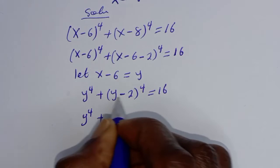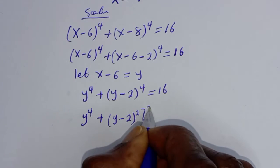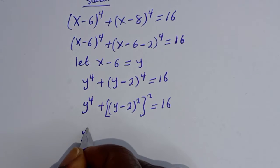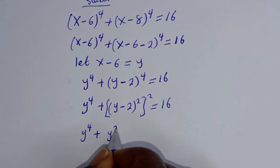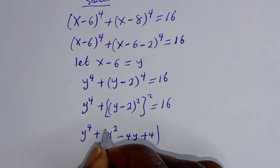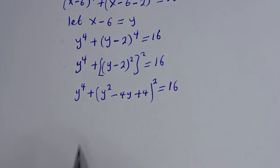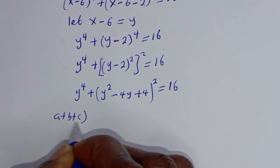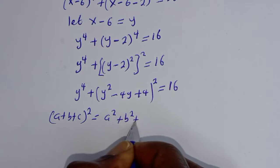We write y⁴ plus (y minus 2)² squared equals 16. Expanding (y minus 2)² gives y² minus 4y plus 4, so we have y⁴ plus (y² minus 4y plus 4)² equals 16. Note that (a plus b plus c)² equals a² plus b² plus c² plus 2ab plus 2bc plus 2ac.